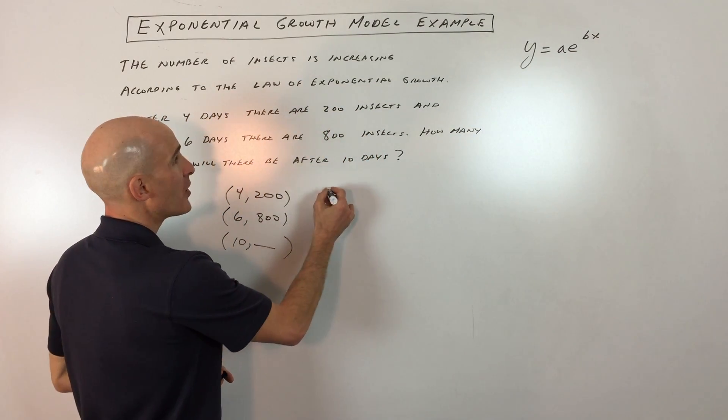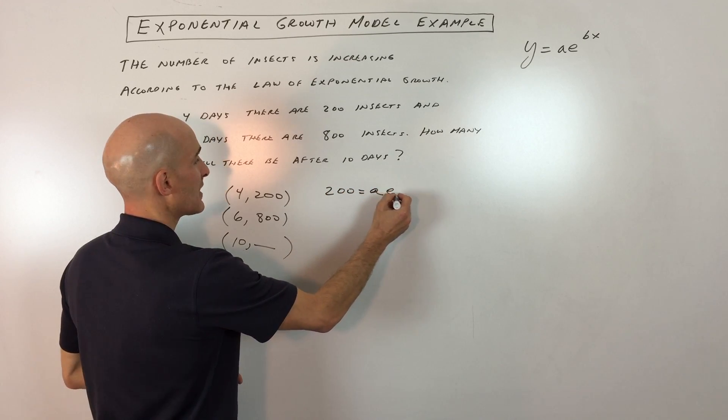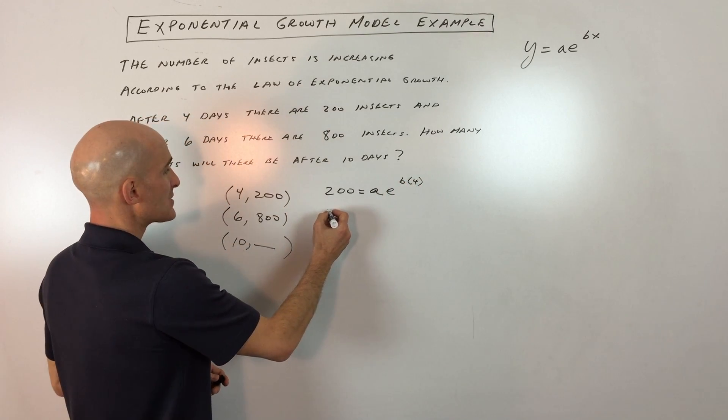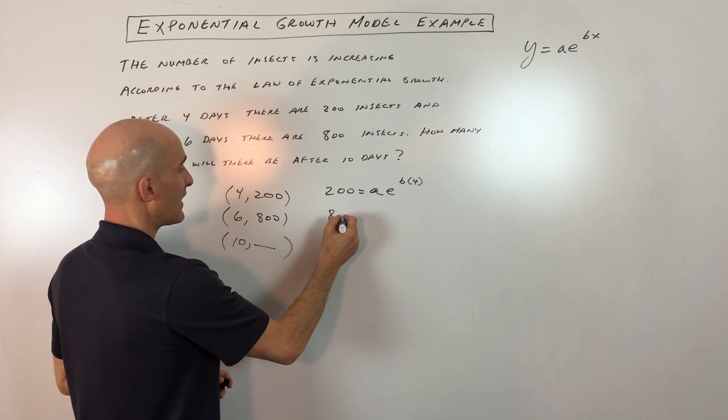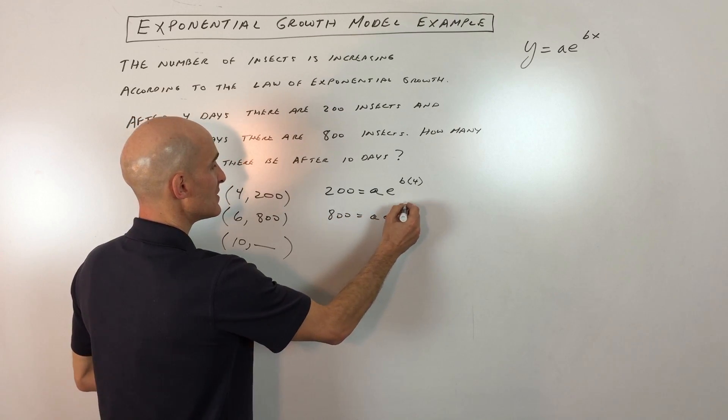We're going to put 200 in for y, equals a times e to the b times 4. That's our first equation. Our second equation: 800 equals a times e to the b times 6.